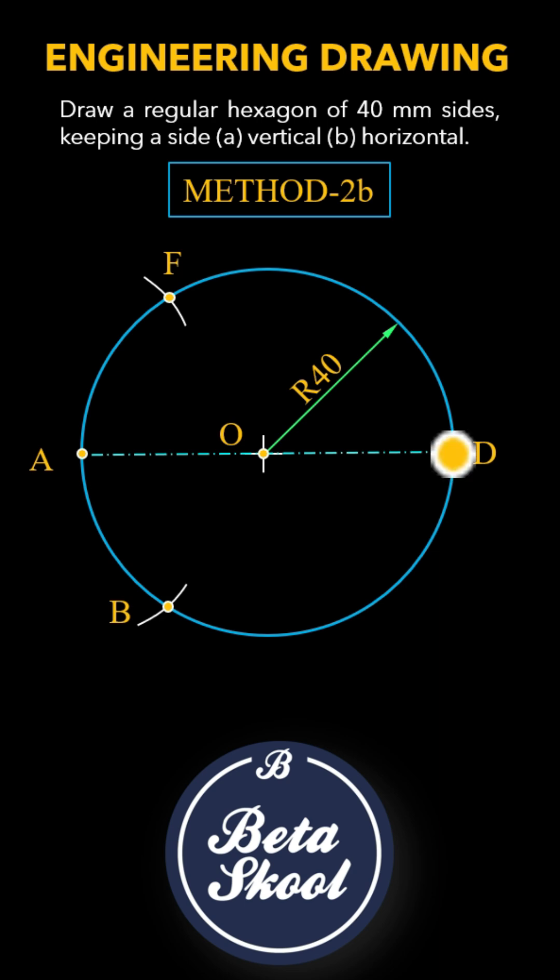Similarly, with point D as the center and with the same radius, draw arcs that intersect the circle at two different points. Mark the intersection points as C and E respectively.